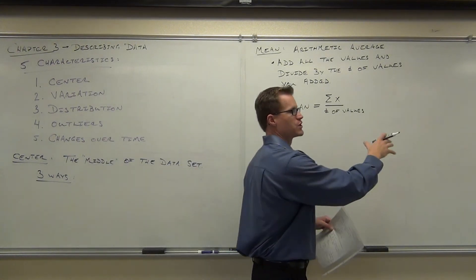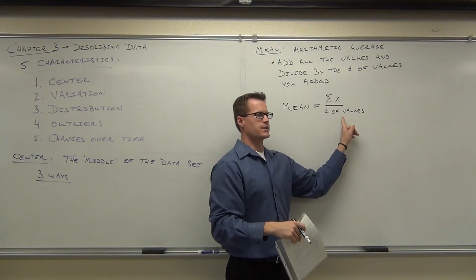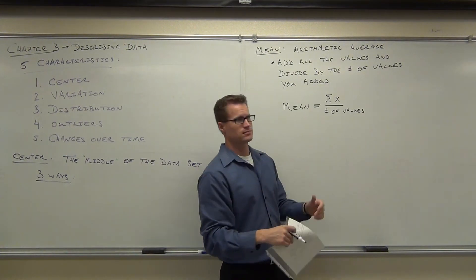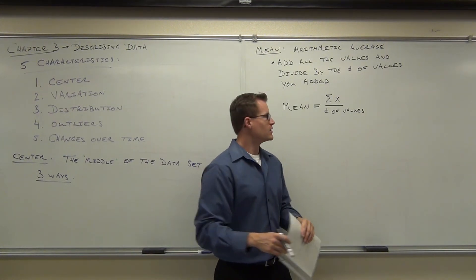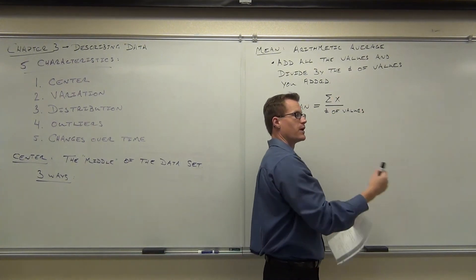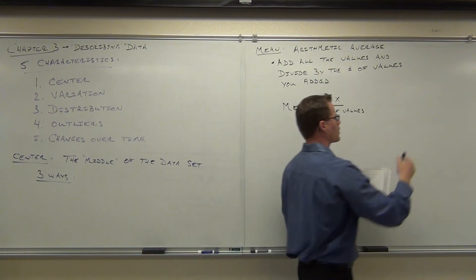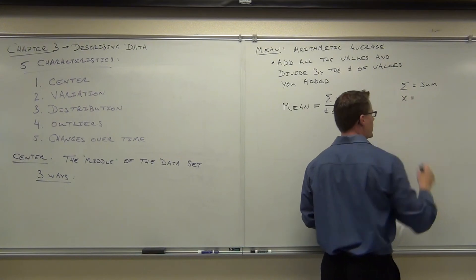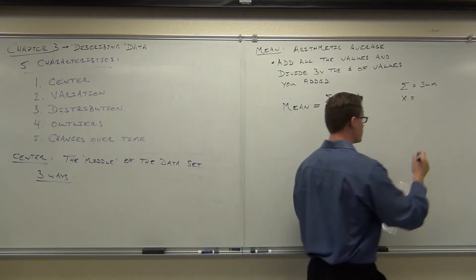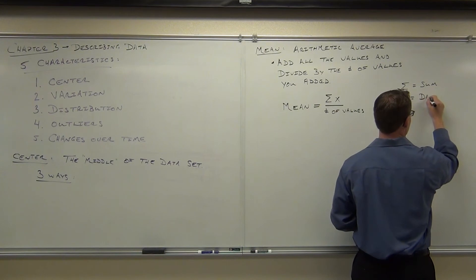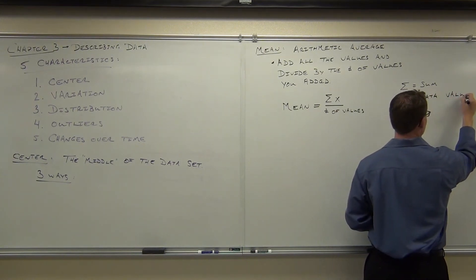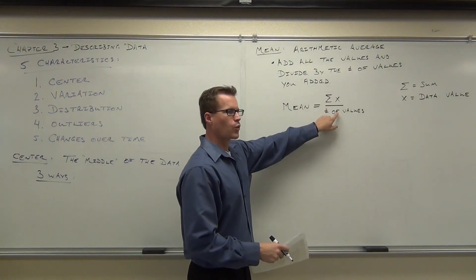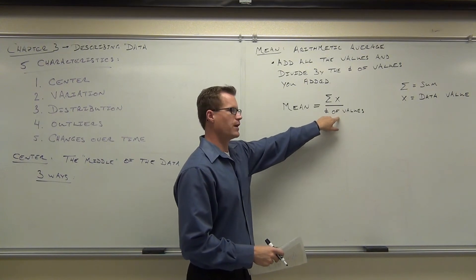I do have to give you some notation over here because this one, I can't give you one letter yet because it's going to depend on something. So we have the mean is you add everything up, you divide by the number of values you added. Our sigma means sum, X is the variable we use for our data or a data value.